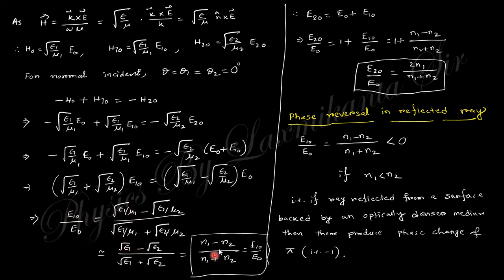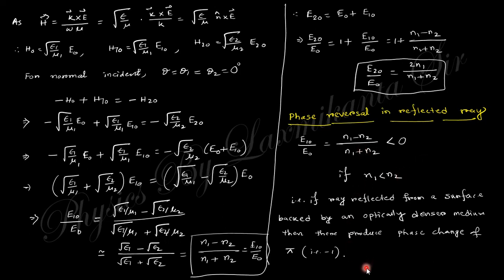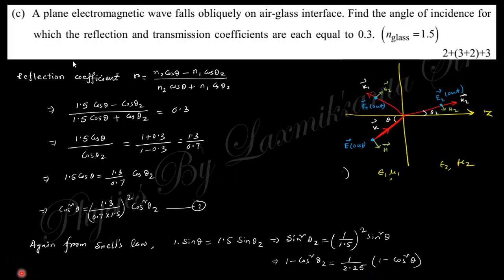From those relations, the reflection coefficient and transmission coefficient are obtained. For phase reversal of the reflected wave, the reflection coefficient must be negative. This occurs when n1 is less than n2 — when the wave travels from a medium of lower refractive index to higher refractive index, the reflection coefficient is negative, indicating a phase reversal of the reflected wave.